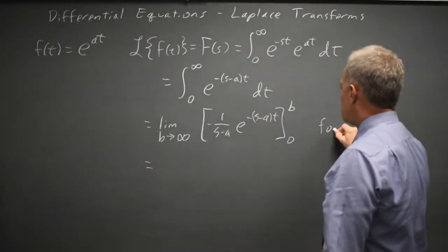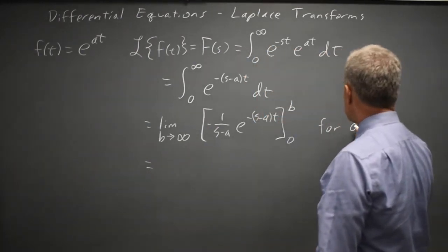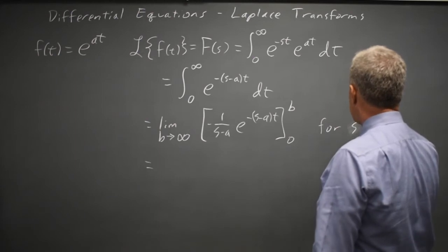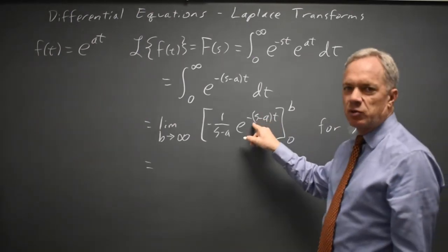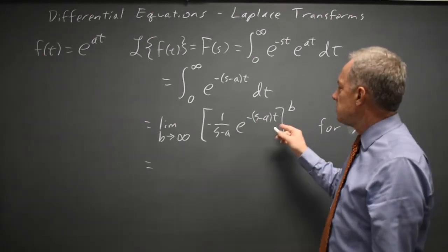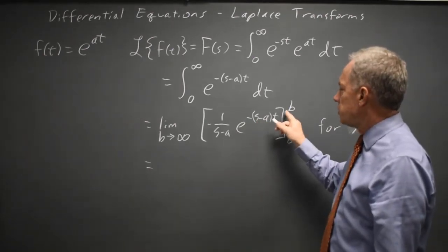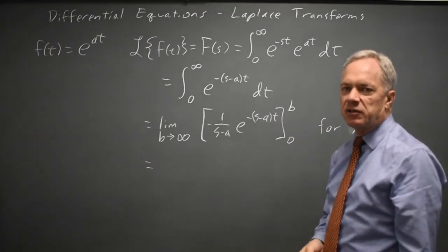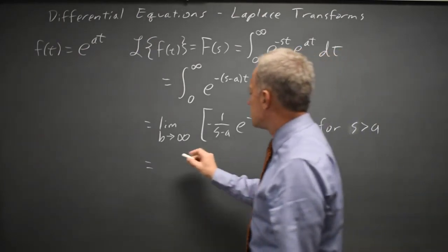And for s greater than a, s minus a is a positive quantity. So negative s minus a is a negative quantity. And as t, as b goes to infinity, e to the negative s minus a times b goes to zero.